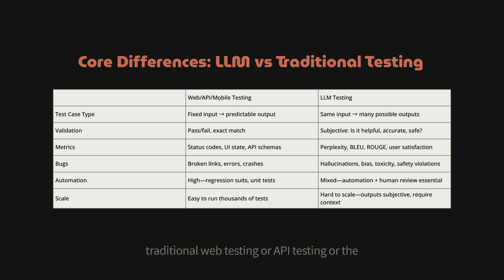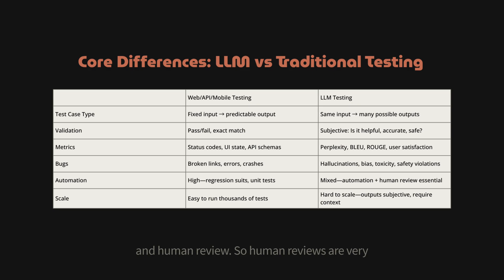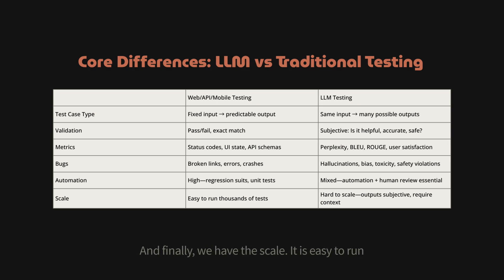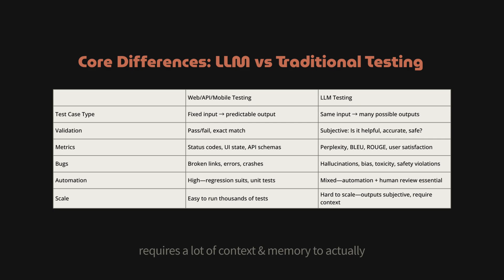From an automation standpoint, automation is applicable for traditional web, API, and mobile testing. Similarly, automation tools are available for LLM testing, but we use a mixed approach — both automation and human reviews, since human review is essential for LLM evaluation. Finally, for scale: it's easy to run thousands of test cases in traditional testing, but very hard to scale LLM testing because outputs are subjective and require a lot of context to simulate different edge cases and use cases.